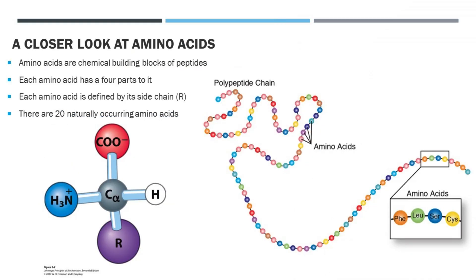Let's look closer at amino acids. Each amino acid has four main parts: the amino group shown in blue, the carboxylic acid shown in red, the alpha carbon shown in grey bound to a hydrogen, and lastly the R group shown in purple. The R group is a placeholder for different chemical structures that can fill this space — it is what makes amino acids different from one another. As you can see on the right, phenylalanine, leucine, serine, and cysteine are all bound together in a peptide chain, each with unique R groups, also known as side chains. There are 20 naturally occurring amino acids with distinct side chains, and we'll be going over those in more detail in the next video.